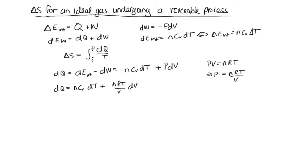Now because we're trying to get to this, the next thing we need to do is divide by temperature. So we have dQ over T equals nC_v dT over T, plus nR dV over V.